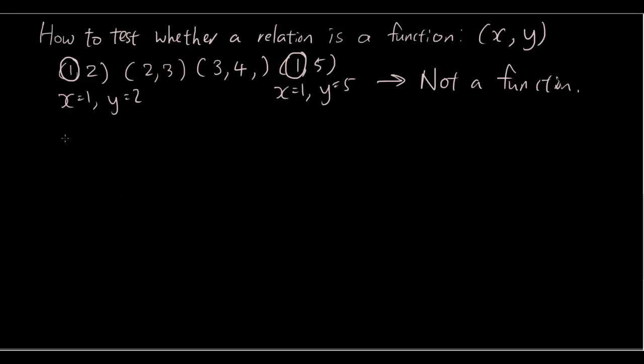On the other hand, if I give you, so that's relation number 1. Let's say if I give you another relation where I give you the coordinates as (2, 3), (3, 5), (1, 4) and that's it. Then this is a function.